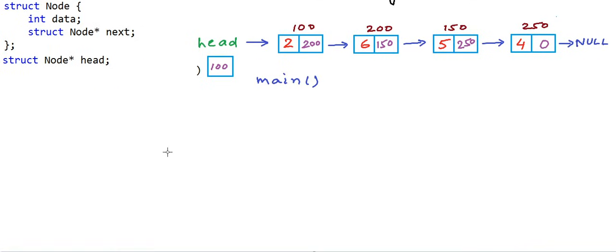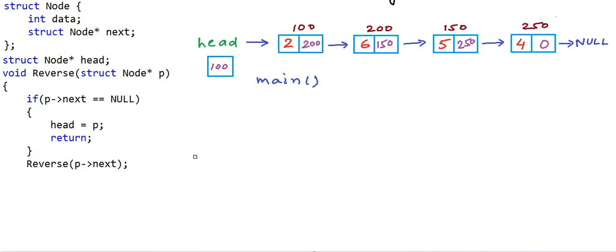For simplicity, let's say head is a global variable accessible to all functions. We implement a function named 'reverse' that takes the address of a node as argument — initially the address of the head node. I want to go on making recursive calls until I reach the last node, for which the link part will be null. This is my exit condition. As soon as I reach the last node, I modify the head pointer to make it point to that node.